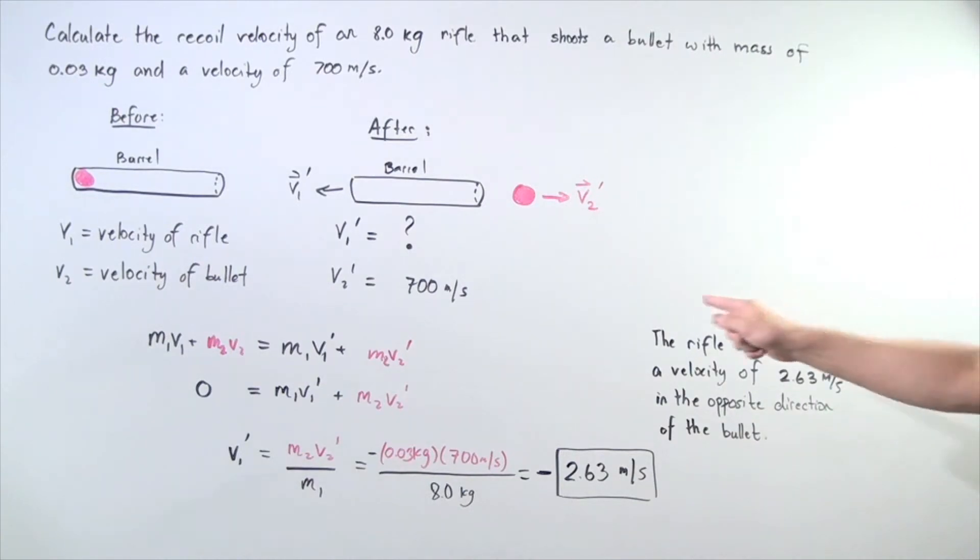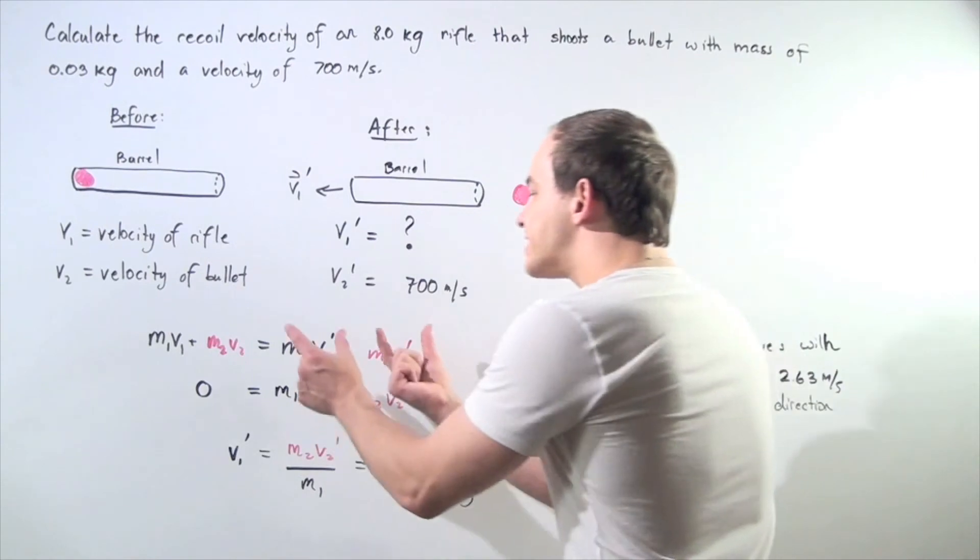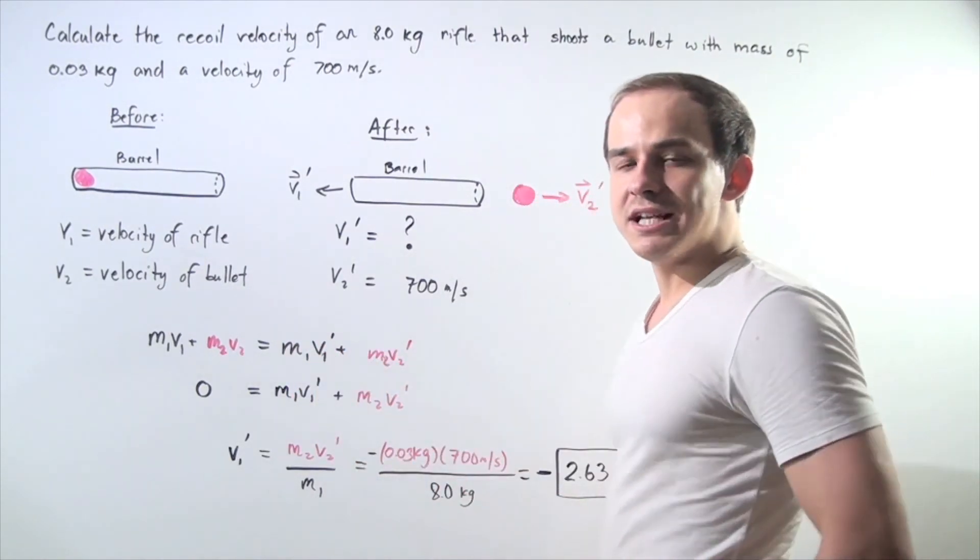We conclude that the rifle moves with a velocity of 2.63 meters per second in the opposite direction of the bullet. If we sum up these two momenta, that will give us 0.